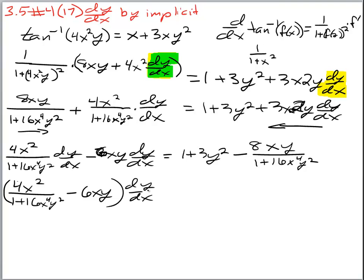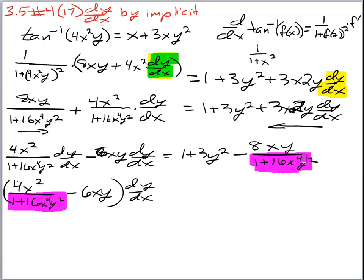It's actually going to make your life easier if on the left hand side you put it all over a common denominator and make it one big fraction. Because then when you divide by the fraction you just flip and multiply. And you might also realize that if we have one big fraction on the left it might be easier to have one big fraction on the right, since this will also be the common denominator on the right. So when you flip and multiply those two things will cancel.